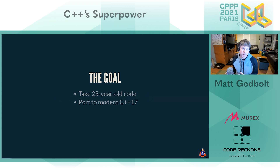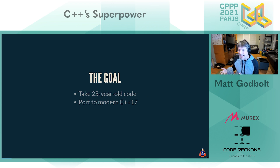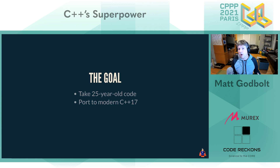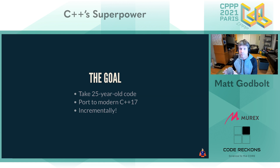I'm going to do that through the medium of demonstration, showing you why backwards compatibility is cool, how it can be achieved, and why you should care. My goal today is to take some old code — 25-year-old code, as old as my career — and port it to modern C++17. We're in 2021 and C++20 is mostly out, but I started this project 18 months ago so there's a bit of lag. The key thing is I'm going to do this incrementally, almost line by line.